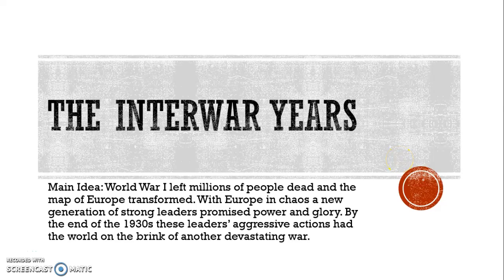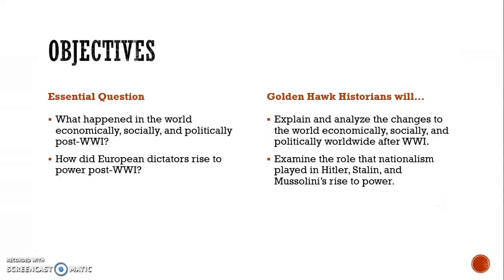Hey y'all, welcome back for another flip video. Today we're going to be talking about the interwar years — the years in between World War I and World War II. After World War I ended, millions of people were dead, and Europe as a whole was transformed with new boundaries and new countries erupting. With Europe in chaos, a new generation of strong leaders promised power and glory for those nations, and nationalism surged. The objectives we're going to focus on are what happened in the world economically, socially, and politically post-World War I, and how European dictators rose to power post-World War I.